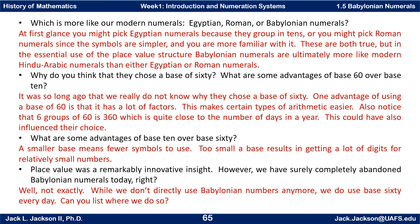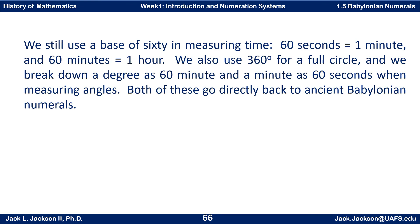What are the advantages of base 10 over base 60? A smaller base means fewer symbols to use, and a smaller base results in getting many digits for relatively small numbers. Place value was a remarkably innovative insight. However, while we don't directly use Babylonian numbers anymore, we do use base 60 every day: 60 seconds equals one minute, 60 minutes equals one hour, and we use 360 degrees for a full circle. When we break down a degree as 60 minutes and a minute as 60 seconds when measuring angles, both go directly back to ancient Babylonian numerals.